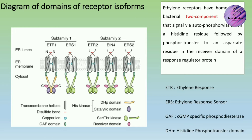In the two-component system, there is a donor — histidine — that donates its phosphate group to the receiver domain, which is aspartate. Aspartate then passes it to the receiver domain, and regulation is carried out.